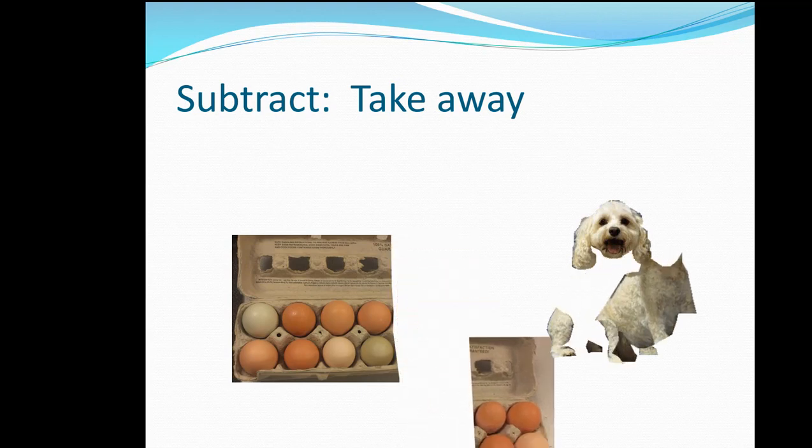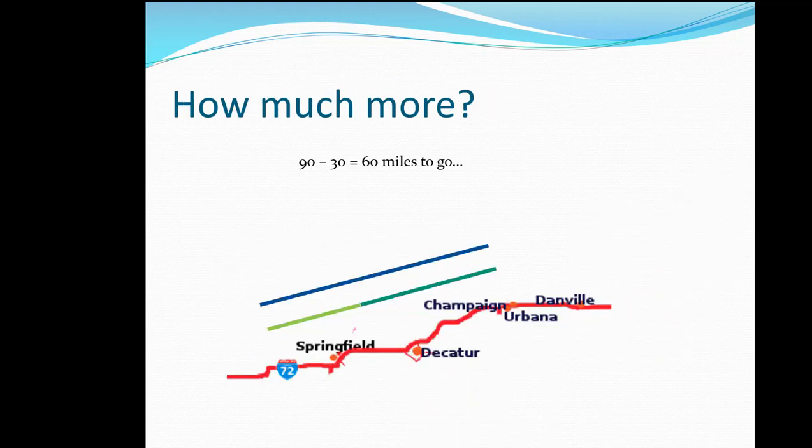We can also subtract to find a part, for how much more do we need. If we've gone 30 miles and the whole trip is 90, we subtract 90 minus 30 to find out there are 60 miles to go.